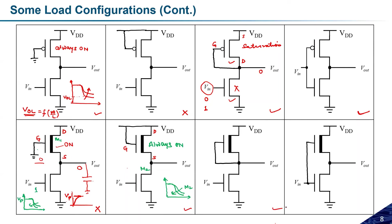If Vin equals zero, Vout will charge toward VDD — but Vout can never exceed Vp, because once it crosses Vp, the Vgs of the depletion transistor becomes more negative than Vp. So the maximum Vout when Vin = 0 is only Vp, not VDD. The swing is only between Vp and zero, so this circuit does not act as an inverter.